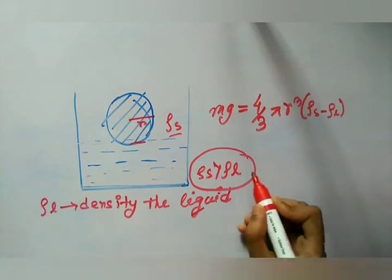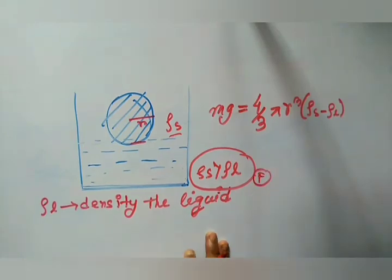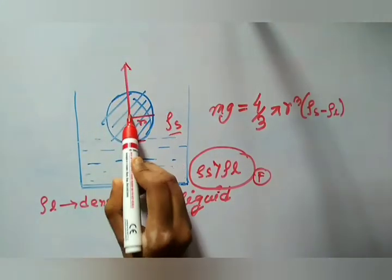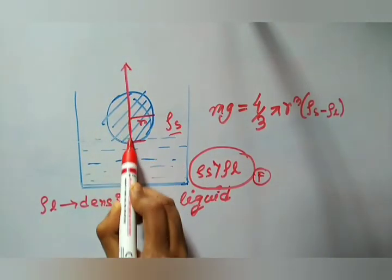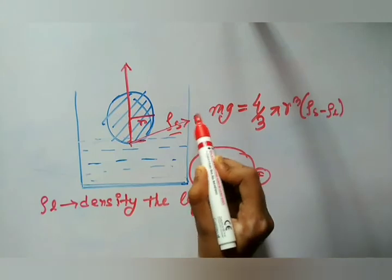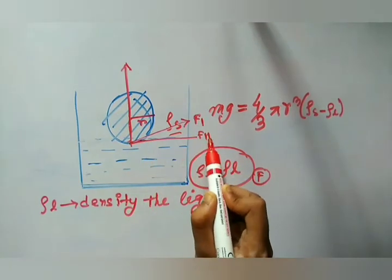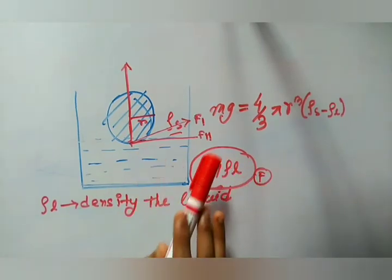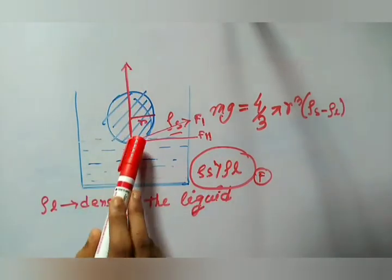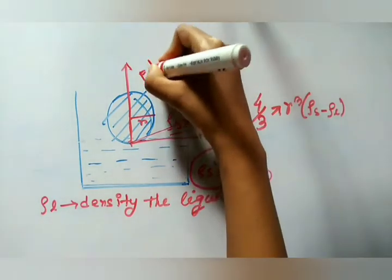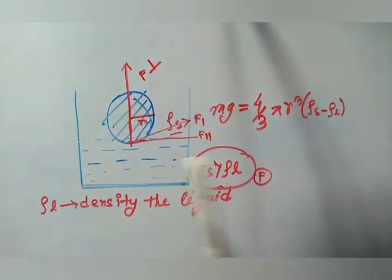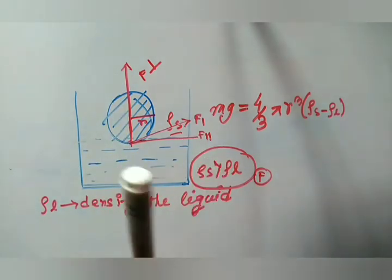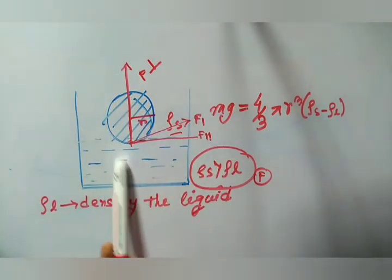If you consider a force acting tangentially, it has two components — F1 and F2. The parallel components cancel each other, but the net upward force due to the perpendicular component is F_perpendicular, which balances the downward force. This force is due to surface tension.